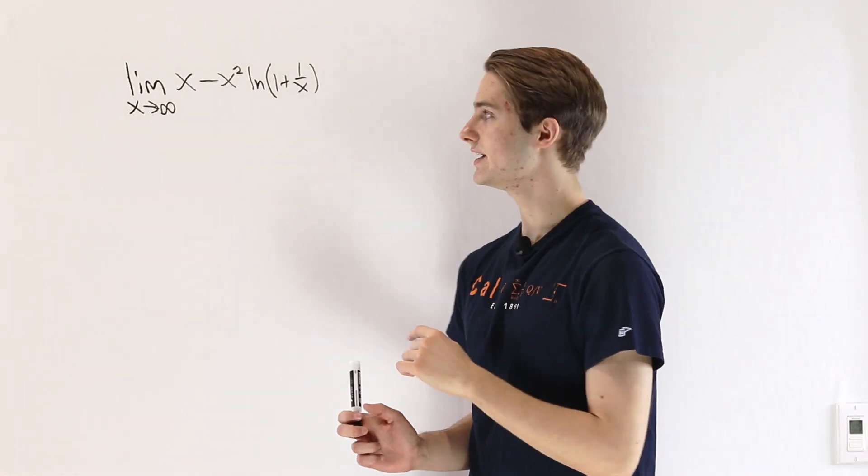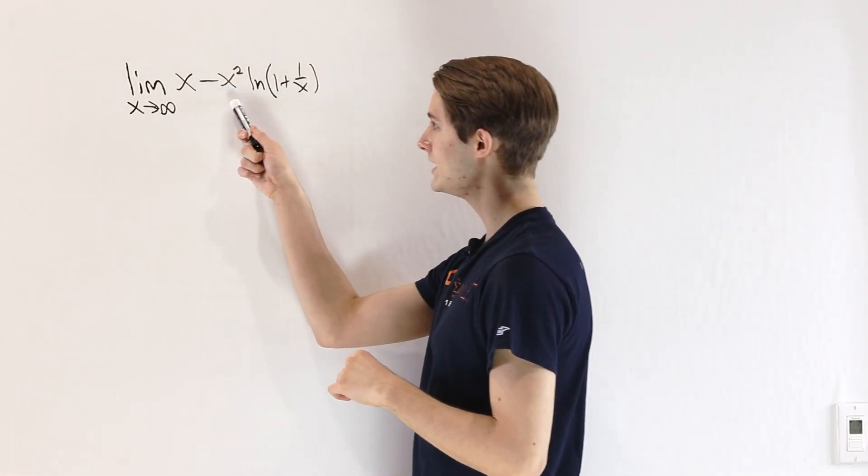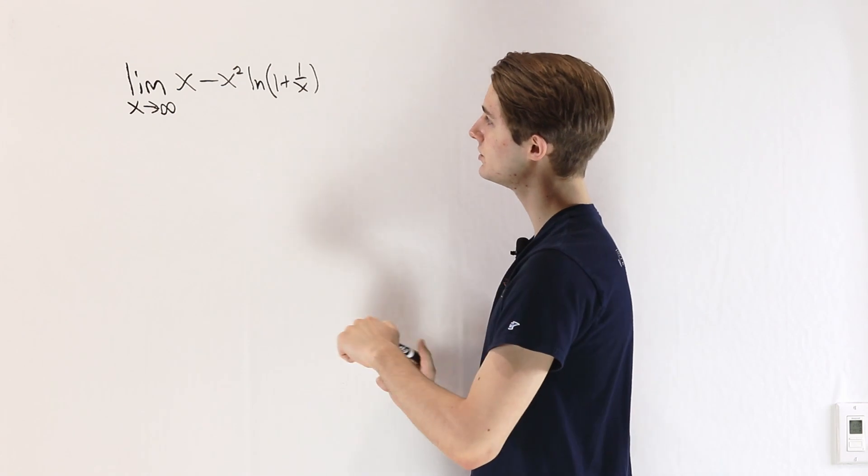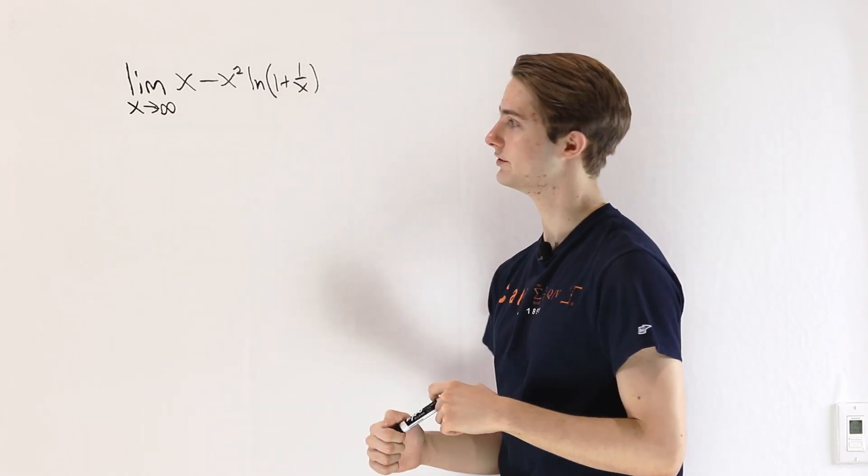So we are going to do the limit as x approaches infinity of x minus x squared times the natural log of 1 plus 1 over x.